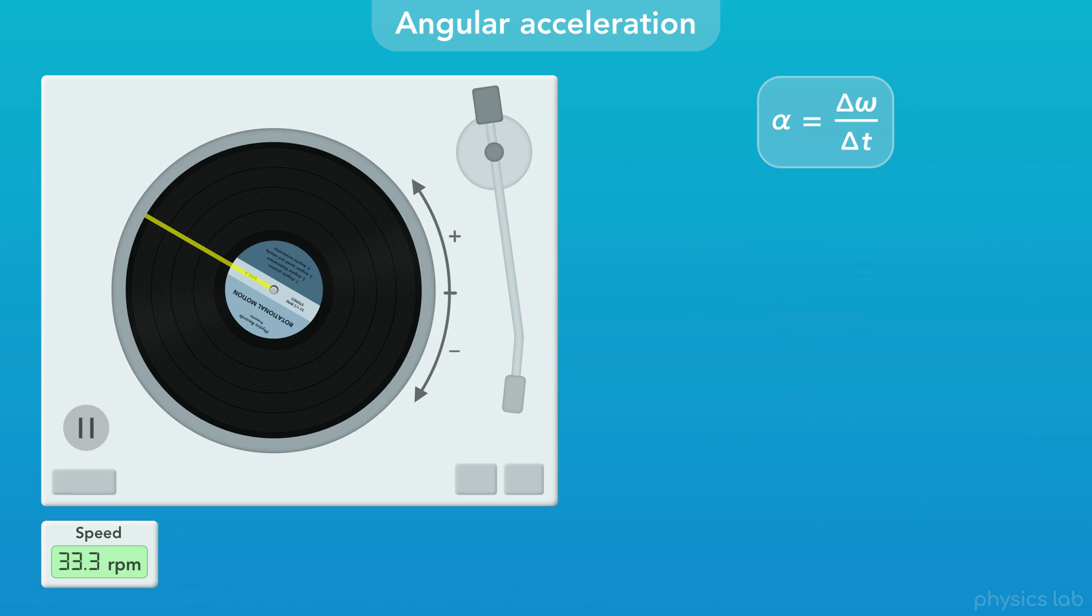Most of the time though, we're going to use the SI unit for angular acceleration, which is radians per second squared.